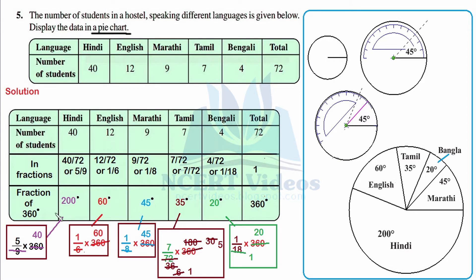For Hindi, 40 over 72 simplifies to 5 over 9 by cancelling with 8. For English, 12 over 72 cancels with 12 to give 1 over 6. For Marathi, 9 over 72 cancels with 9 to give 1 over 8. For Tamil, 7 over 72 cannot be simplified, so we leave it as it is. For Bengali, 4 over 72 cancels with 4 to give 1 over 18.